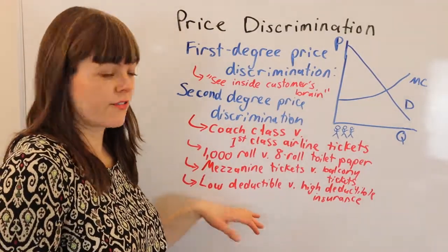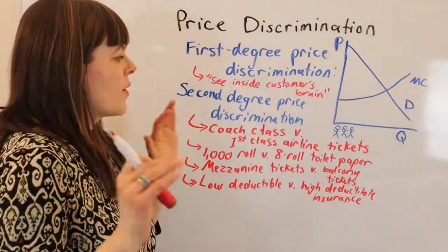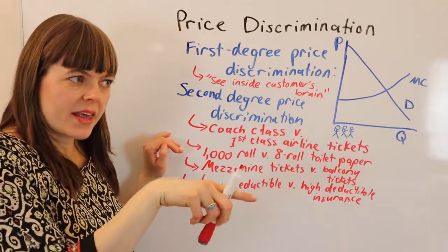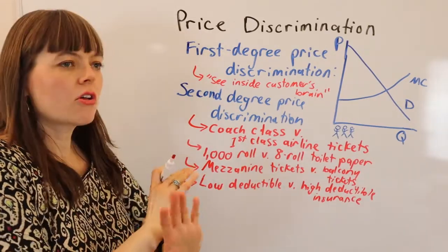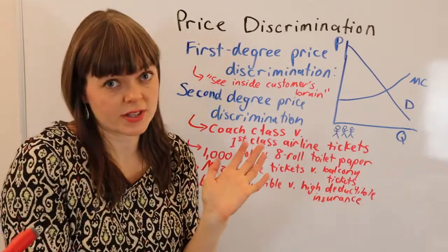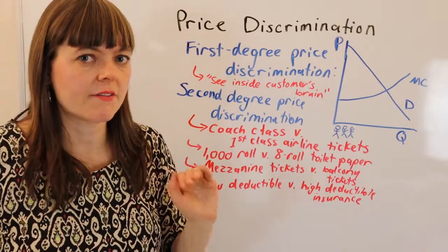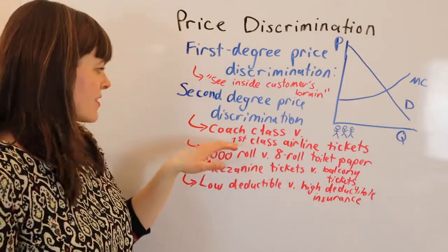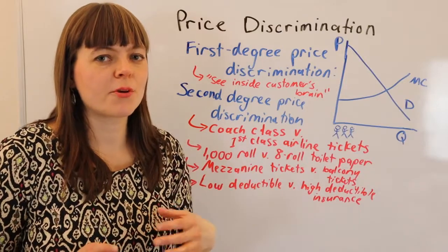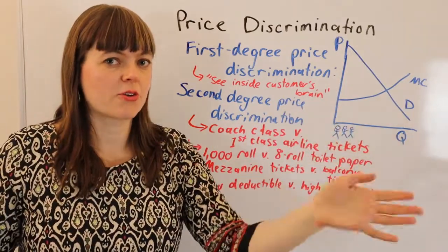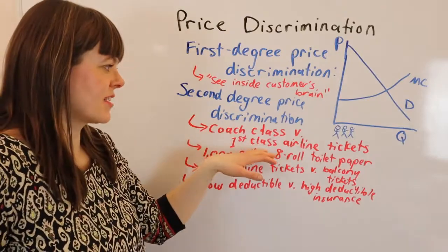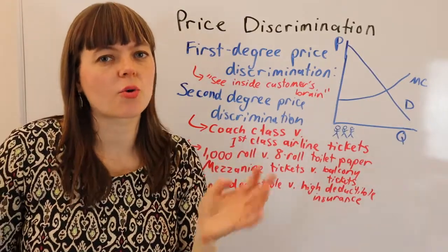And there's low deductible insurance versus high deductible insurance. One thing these have in common is that the price discrimination doesn't happen by looking at the person buying — they're completely blind to who's buying. Rather, they separate out who values the product more versus who is willing to pay less based on product quality. In fact, some argue airlines intentionally make coach class a little more uncomfortable than necessary just to separate out first class buyers and elicit as much money as possible from those willing to pay.